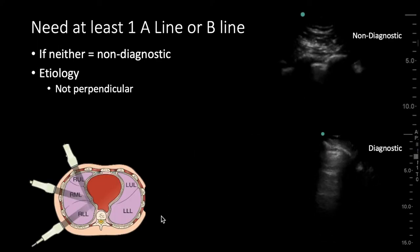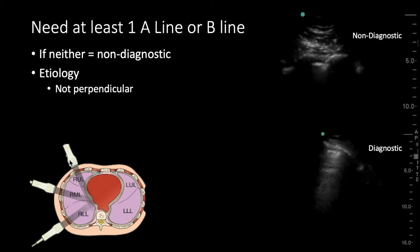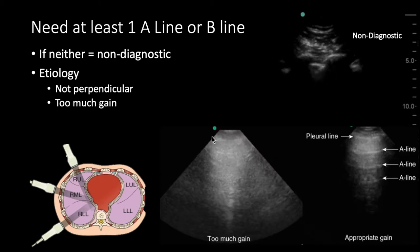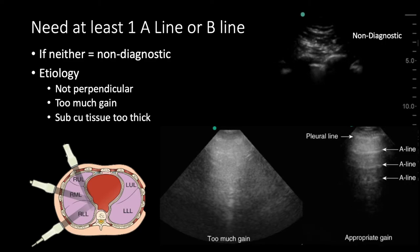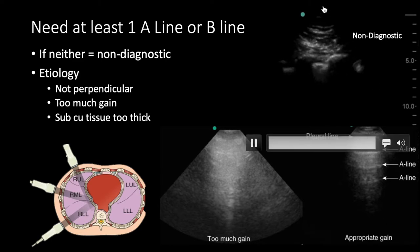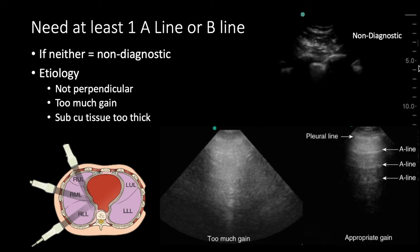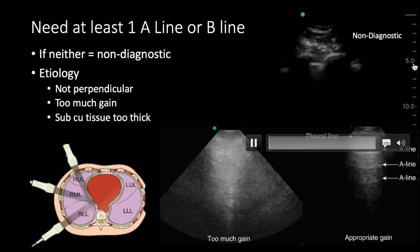If you can't find an A-line, the most common reason is that your beam is not perpendicular — try fanning back and forth or rocking the probe. Another issue is too much gain: when you turn down the gain, A-lines become more apparent. Finally, one of the more common reasons is that the chest wall and subcutaneous tissue is just too thick. If someone's chest wall is five centimeters thick, it's really hard to bring out A-lines because fewer waves can reach the pleura and bounce back through that thick subcutaneous tissue — the pleura is simply too deep.